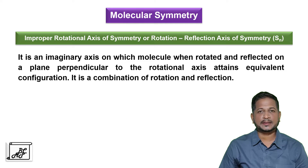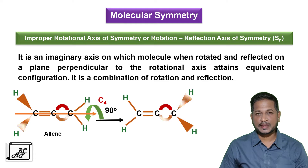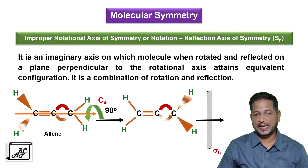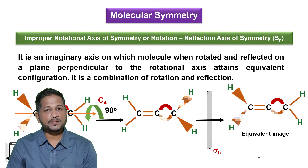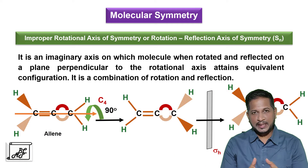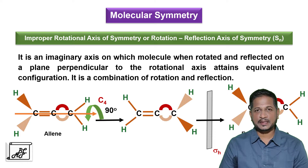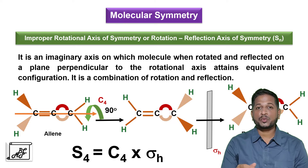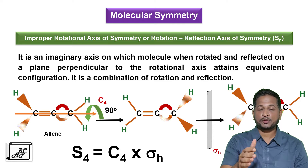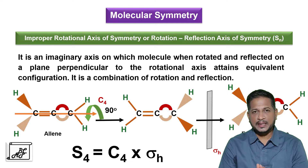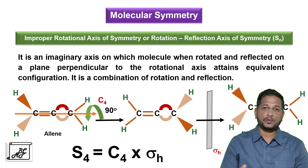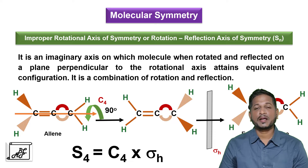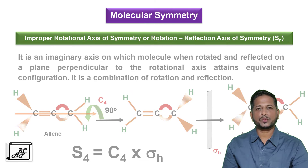Let's understand with the help of another example — the allene molecule. This allene molecule is rotated around C4 axis of symmetry, that is through 90 degrees, and then we carry out a reflection operation in a plane perpendicular to the rotational axis to get an equivalent image. In future when we write character tables, we must remember that this improper axis of symmetry S4 is equal to proper rotational axis C4 followed by reflection in a horizontal plane, sigma horizontal. Therefore S4 = C4 followed by sigma horizontal plane.